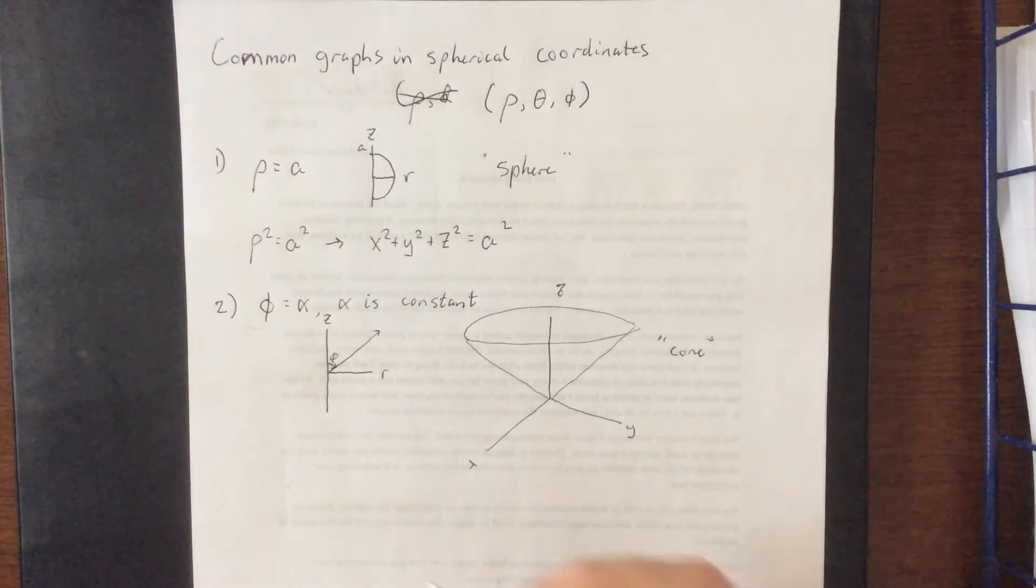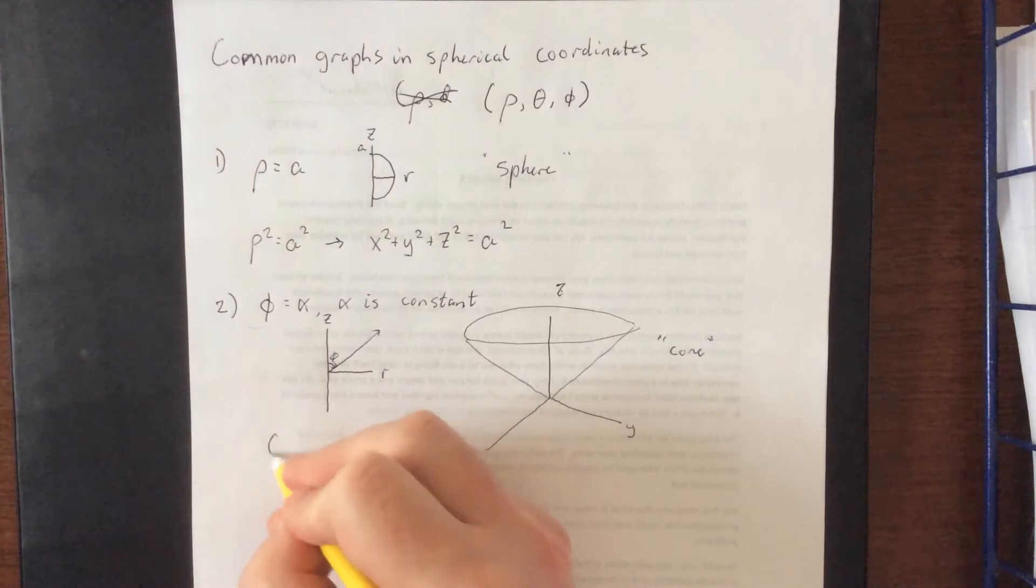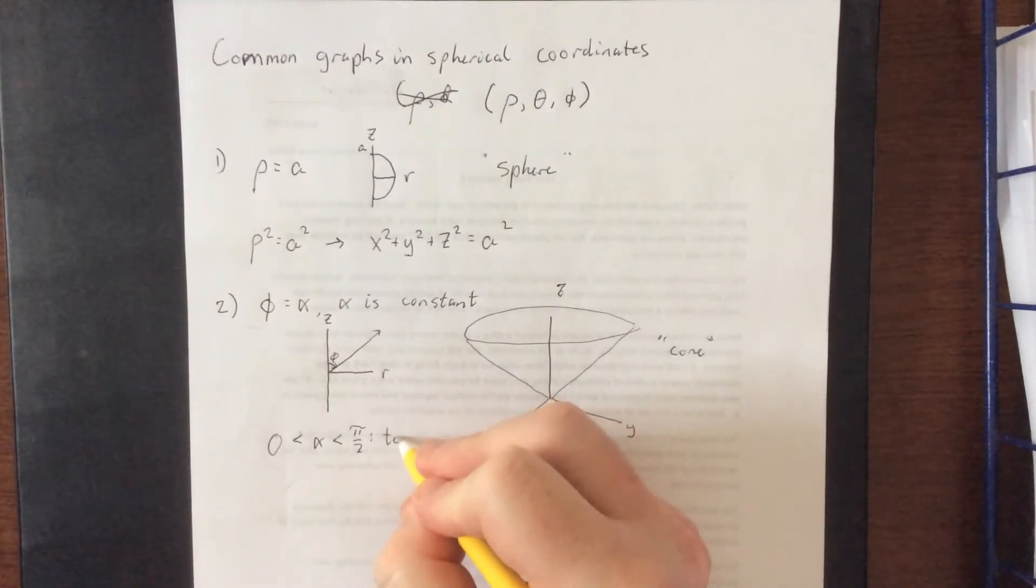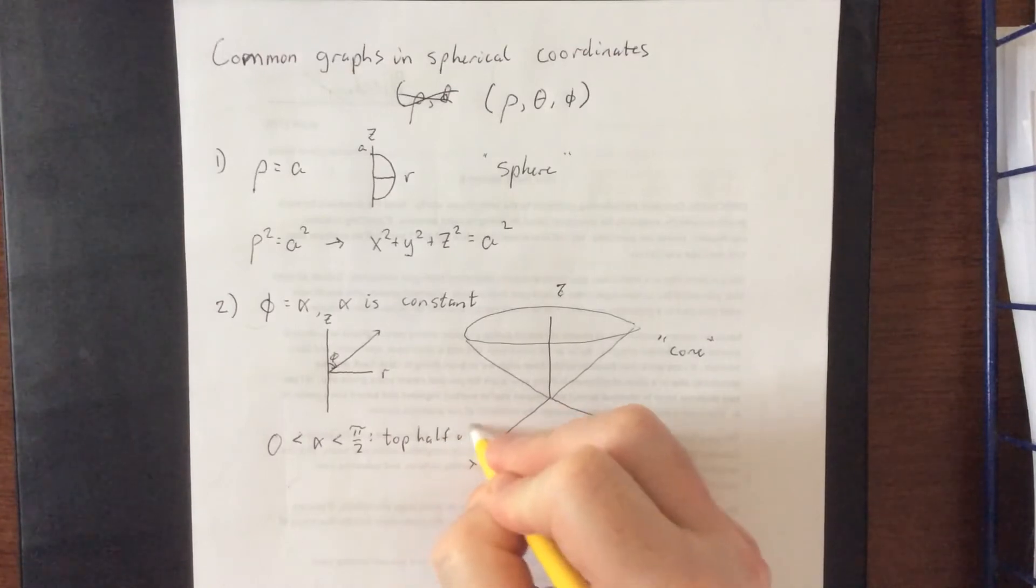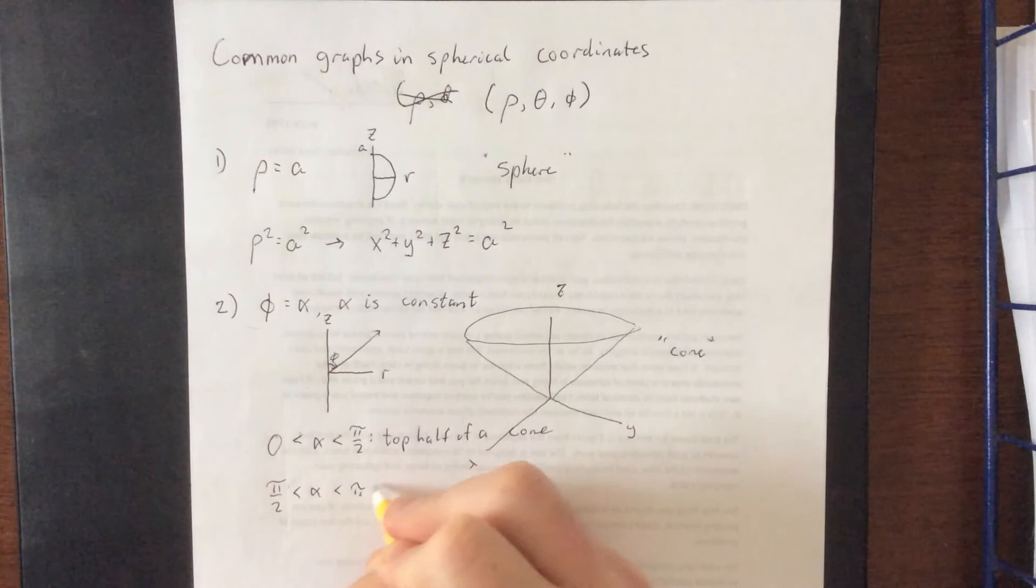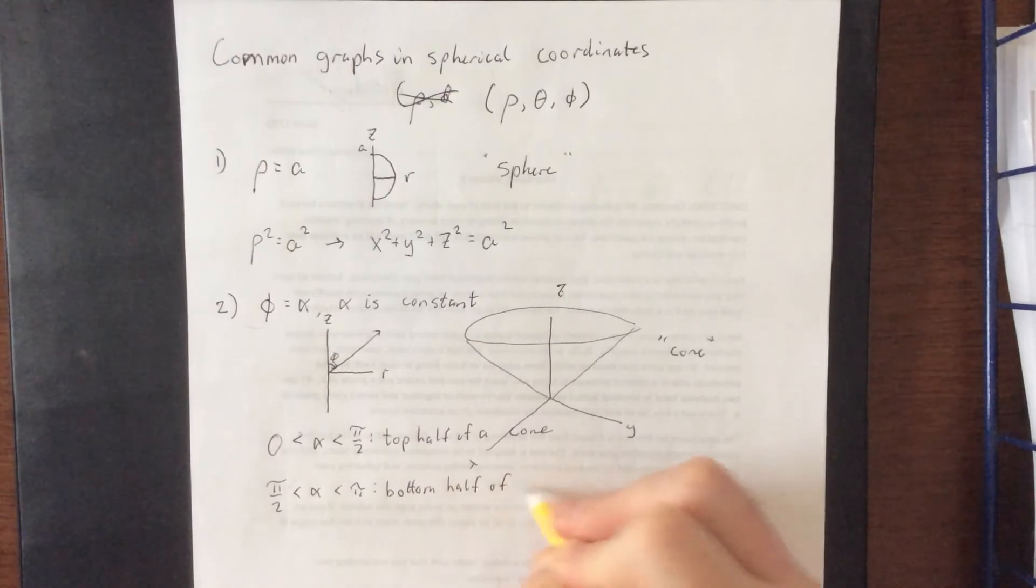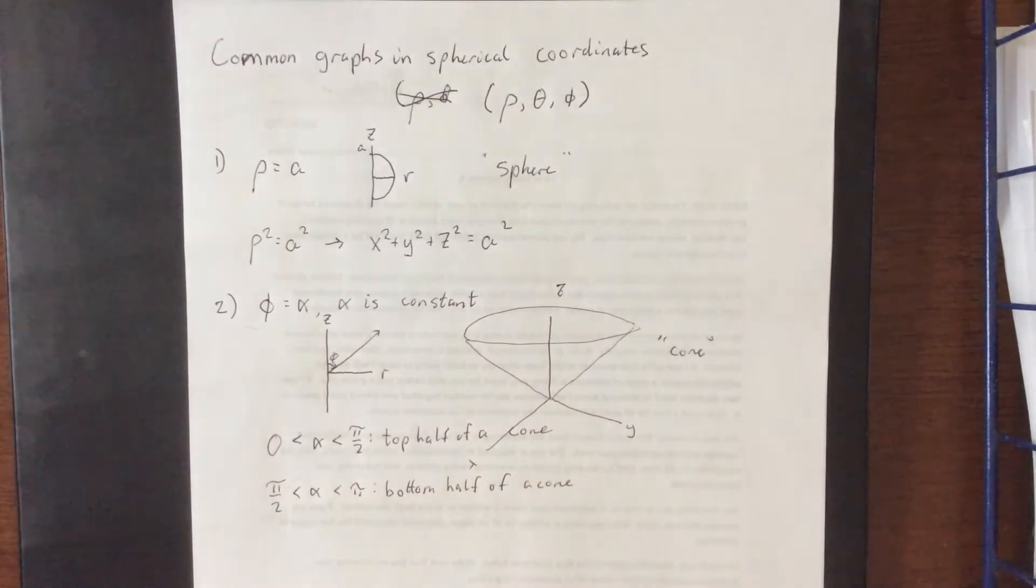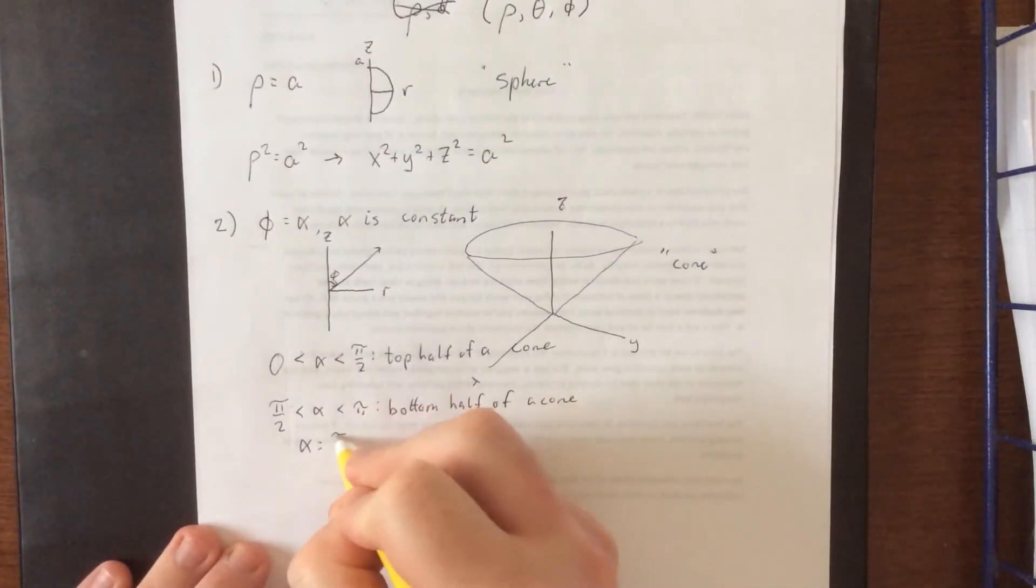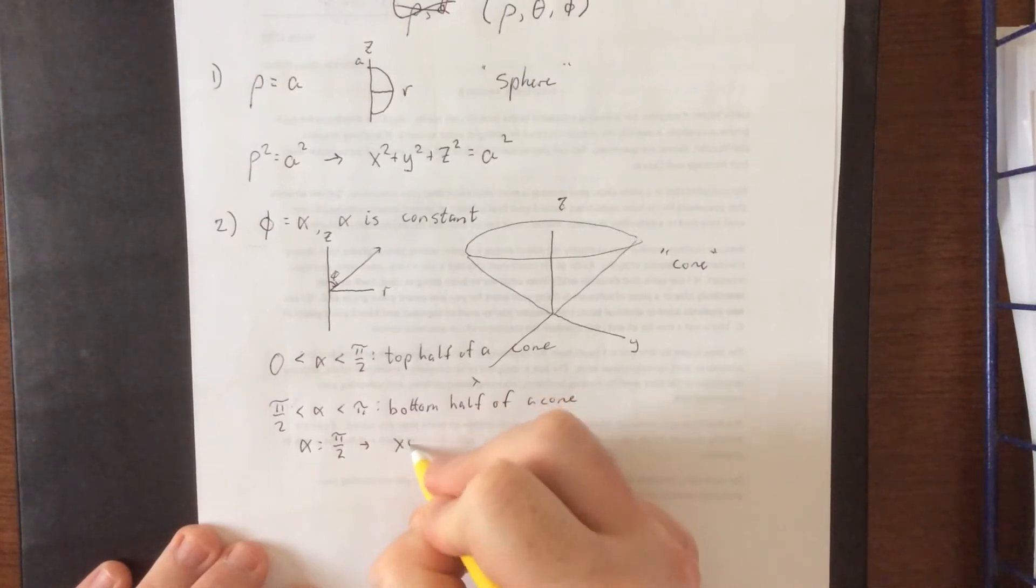Now, a couple quick cases for us here. If we are referring to alpha being between 0 and pi over 2, we could say that this is the top half of a cone. If alpha is between pi over 2 and pi, we could say that this is the bottom half. That would be a part that is below the x-y plane. Whereas, if we had that alpha was equal to pi over 2, that would actually just be the x-y plane.